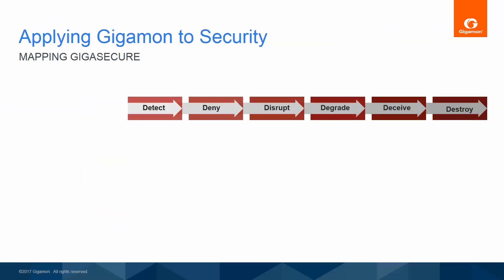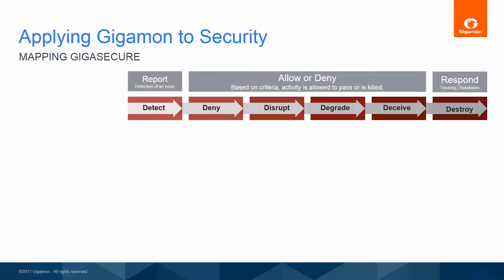Aligning a security delivery platform with a kill chain to present the strongest defense against attacks is accomplished as follows. First, match actions with the kill chain as they relate to data in motion. Detection is largely performed by out-of-band reporting tools. Inline tools are able to make immediate decisions to allow or deny, redirect, or modify packets in order to be effective in the categories of deny, disrupt, degrade, and deceive. The category of destroy relates to some sort of response or retaliation against the attacker, which is outside of the scope of the enhanced visibility benefits provided by a security delivery platform.